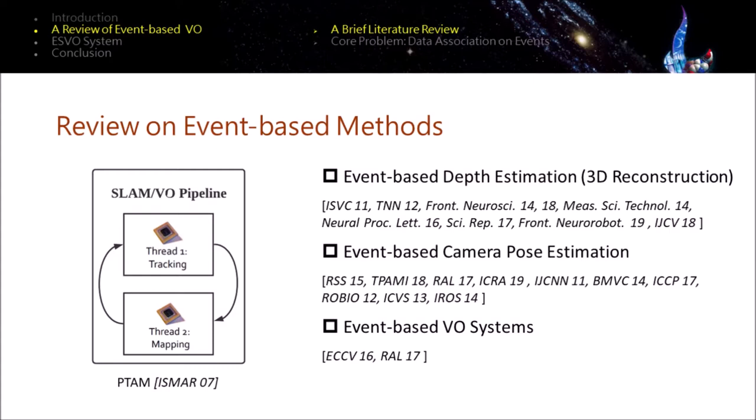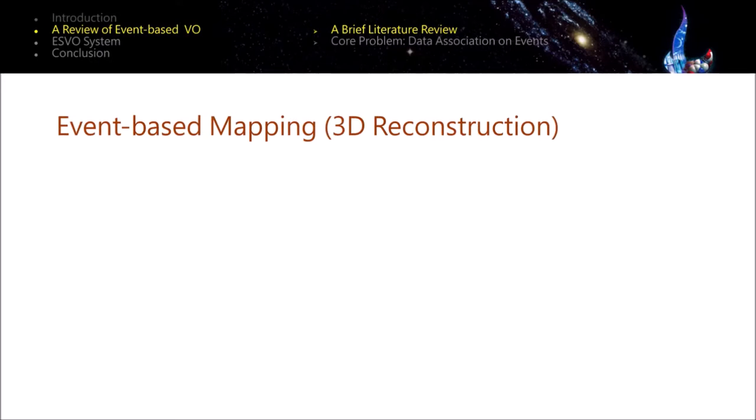Namely, you have to know one of them to solve the other. Tracking and mapping sub-problems are served in parallel and they exchange information recursively. Therefore, our literature review is made on each sub-problem respectively and we highlight two system pipelines at the end. Let's start with the event-based mapping sub-problem.